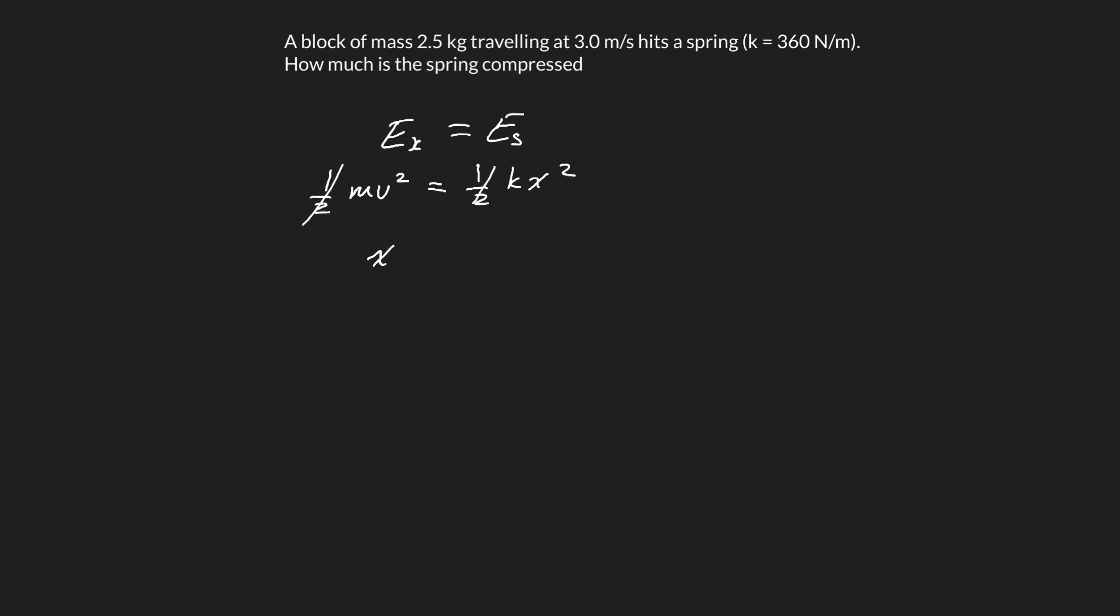We can rearrange this equation to solve for x. So x is plus or minus the square root of mv squared over k.